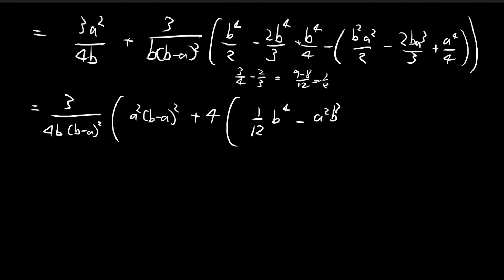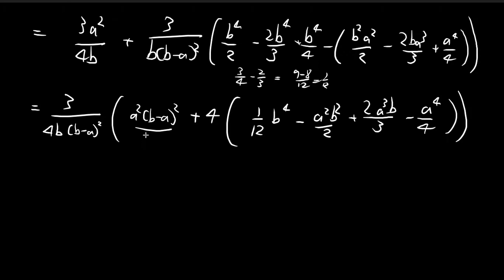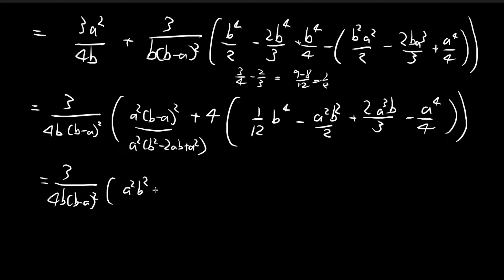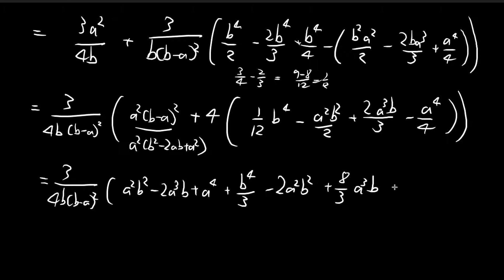Continuing, we have minus a squared b squared divided by 2, plus 2a cubed b divided by 3, minus a to the power of 4 divided by 4. We also expand (b minus a) squared as b squared minus 2ab plus a squared. Multiplying by 4 inside the bracket, the b to the power of 4 term becomes b to the power of 4 divided by 3, then minus 2a squared b squared, plus 8a cubed b divided by 3, minus a to the power of 4. The a to the power of 4 terms cancel out.